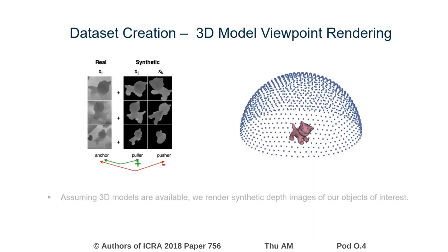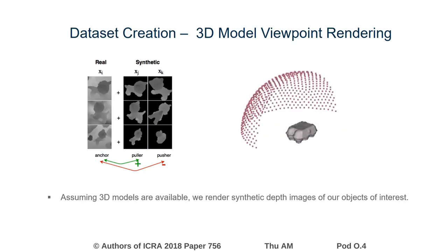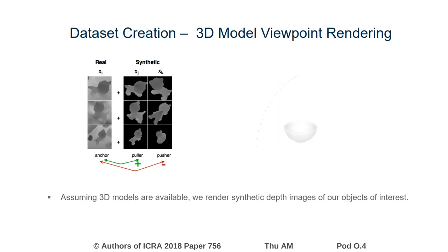Instead, we propose a multi-task learning framework for which we use the available 3D models of the Minemot dataset to render synthetic depth images from different viewpoints, which can be used to train deep learning models. For each object, we render viewpoints lying on an icosahedron, also considering the rotation invariants among certain objects.